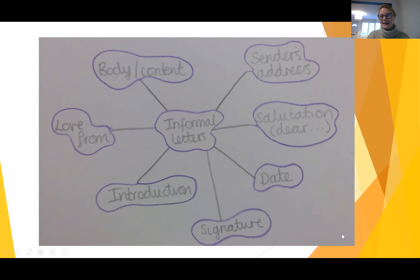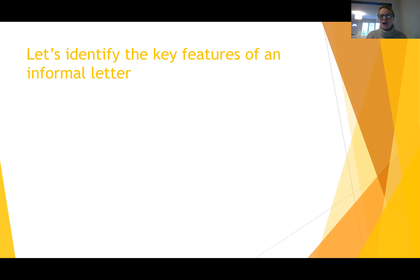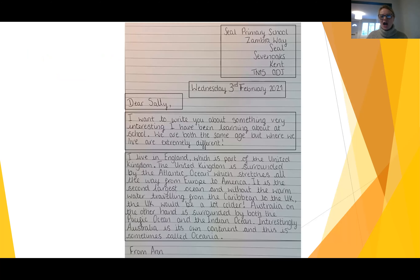If you missed any, you could just pause the video now and record any that you missed. So now we've achieved our first success criteria — we have listed all the features of an informal letter. We're going to go on to the second one, which is to identify or find the features of an informal letter. I've got a letter here which I have made up. This letter is written from somebody called Anne to somebody called Sally, and there are all the features of our letter on this page.